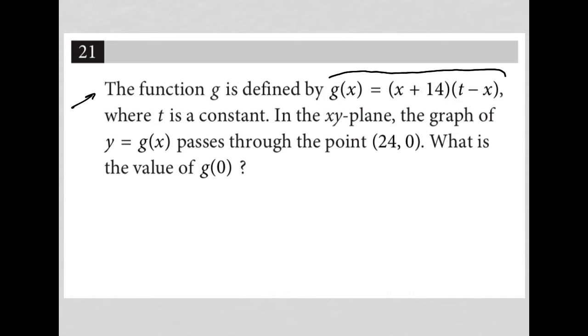In the xy-plane, the graph of y = g(x) passes through the point (24, 0), which means that when x is 24, y is 0, or g(x) and y are the same thing.